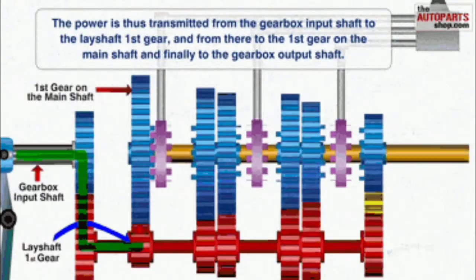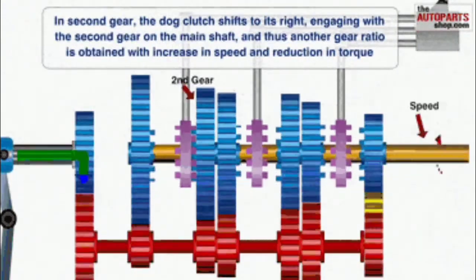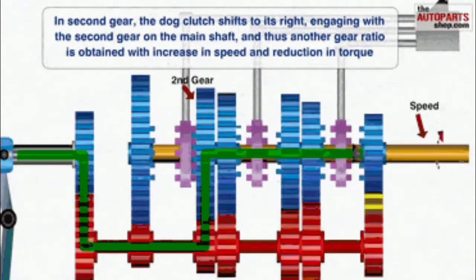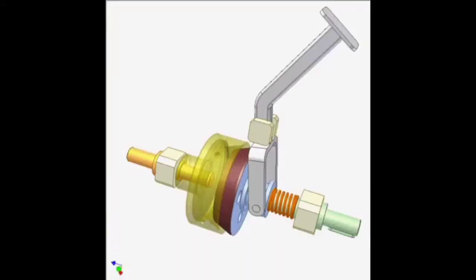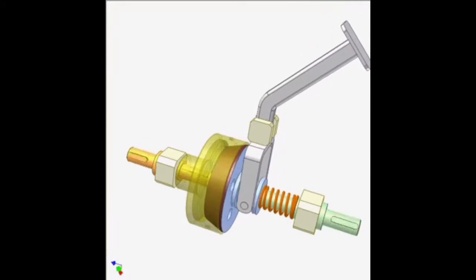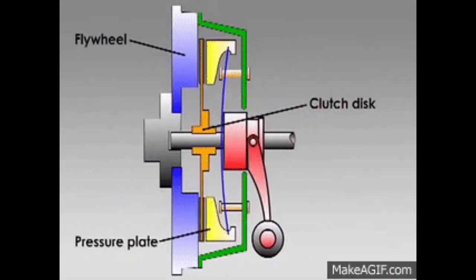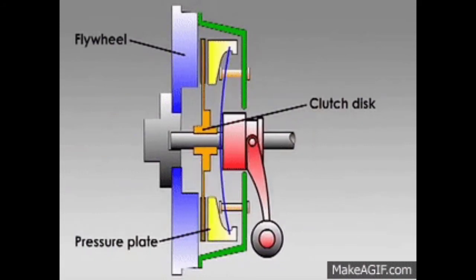Clutches allow a high inertia load to be started with a small power. Clutches are used whenever the ability to limit the transmission of power or motion needs to be controlled, either in amount or over time. For example, electric screwdrivers limit how much torque is transmitted through use of a clutch. Clutches control whether automobiles transmit engine power to the wheels.